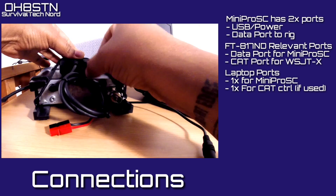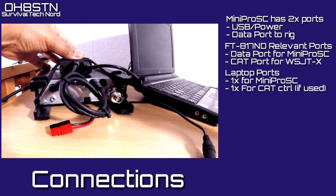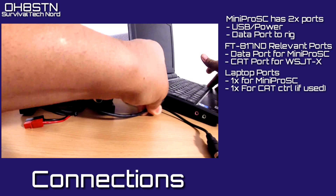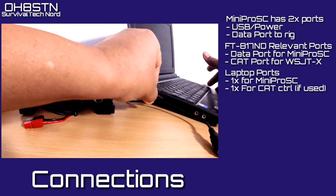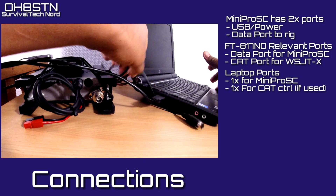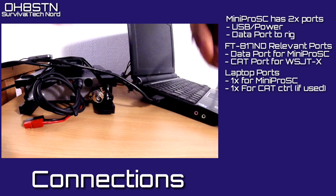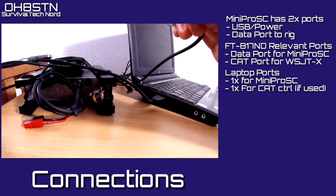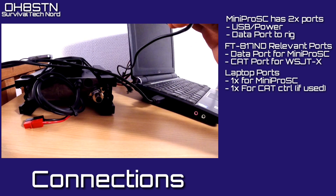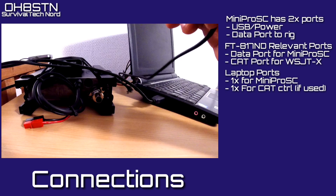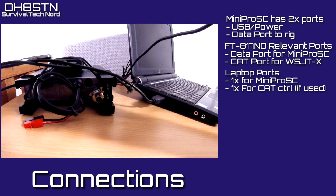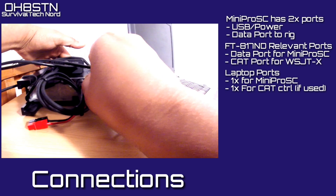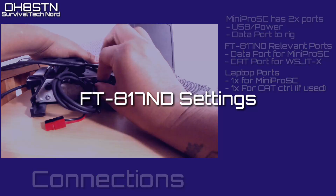The Mini DIN port on the ZLP Mini Pro SC will go to the data port on your radio. The USB port on the Mini Pro SC will go to a spare USB port on your laptop, netbook, or tablet. There's often some confusion between the data port and the CAT port. While some modern radios have built-in USB, on the FT817, 857, 897, and other Yaesu radios, the data port is used for your audio interface. The CAT port is what we use to control the radio through software like FL-Digi or WSJTX.